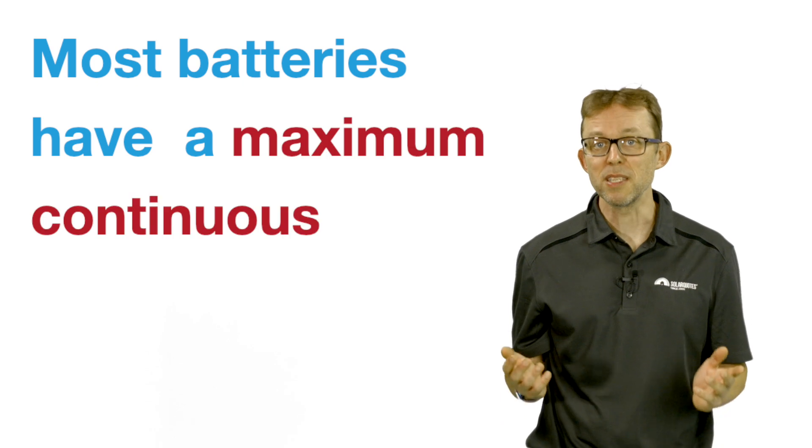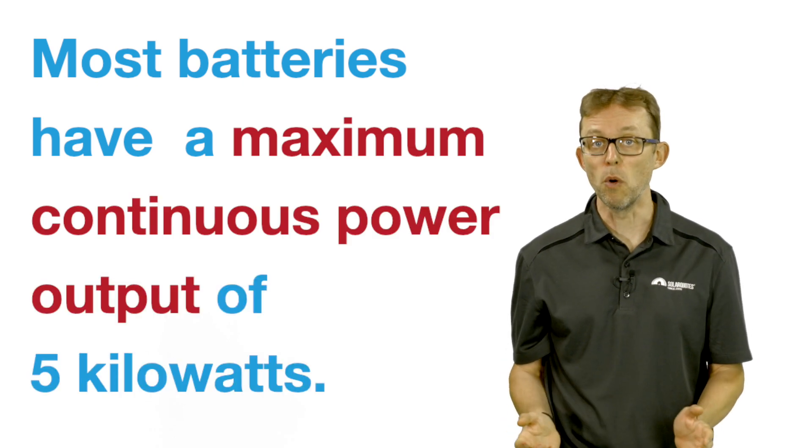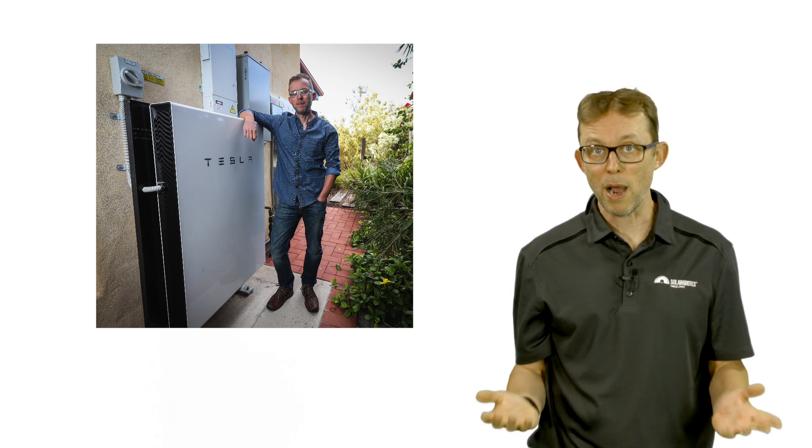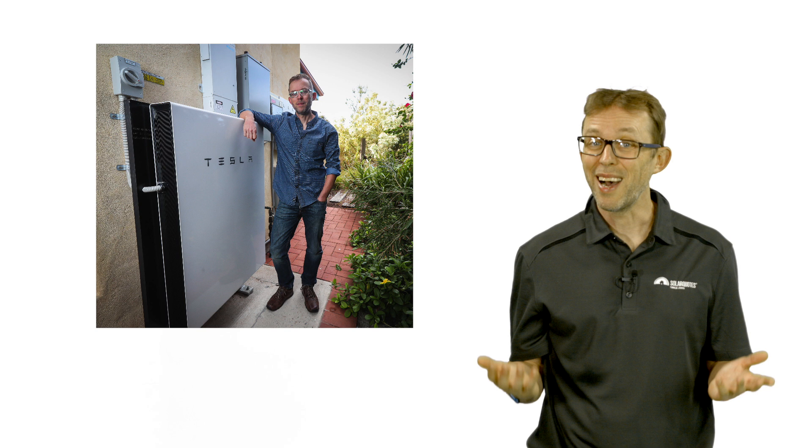Most batteries have a maximum continuous power output of five kilowatts. My Tesla Powerwall, for example, has a five kilowatt output. If I ever want 10 kilowatt power output from my battery system, I need to add a second battery.